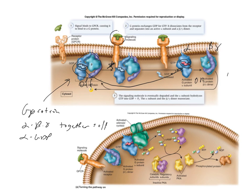The alpha G subunit activates adenylyl cyclase — shown right here — and this adenylyl cyclase then converts ATP to cyclic AMP.